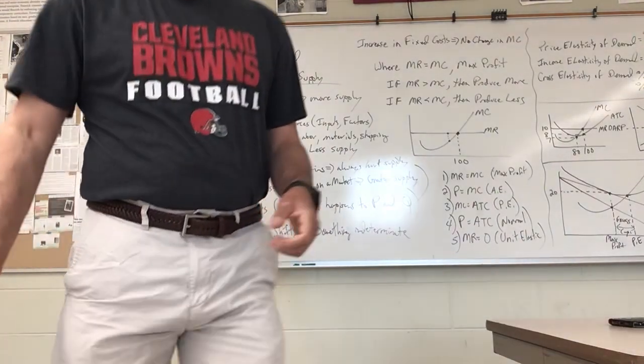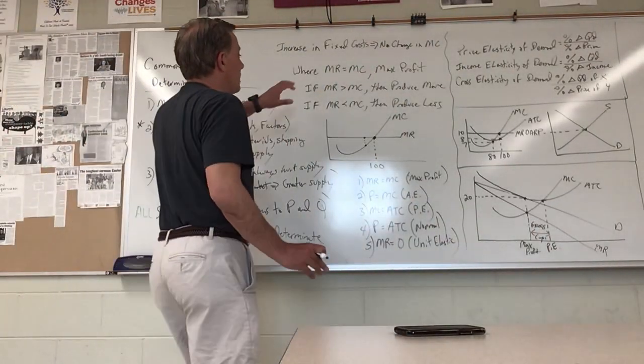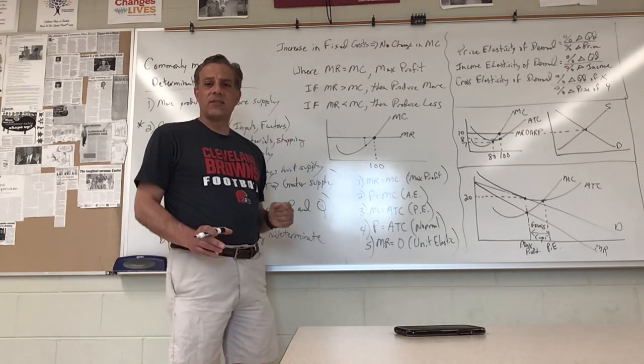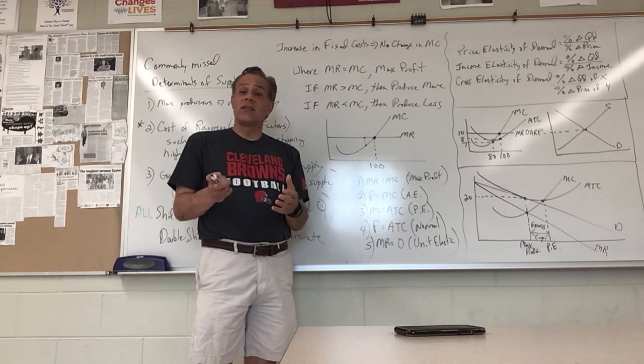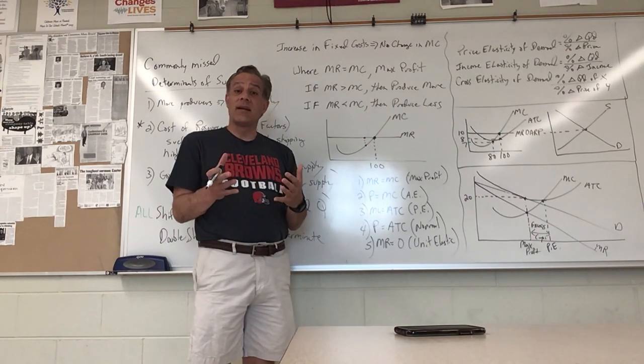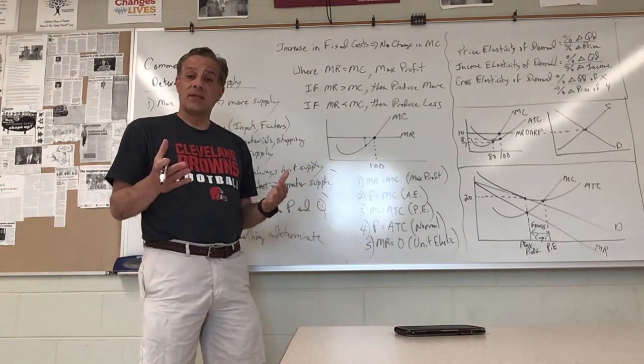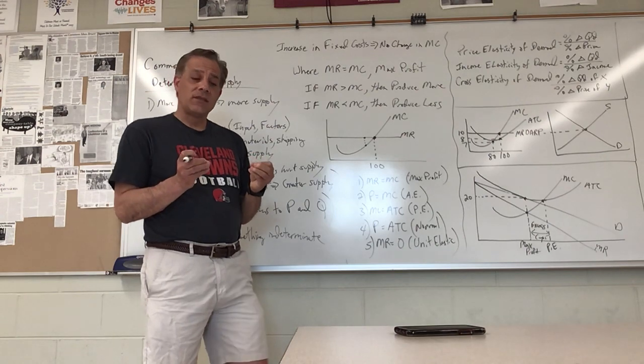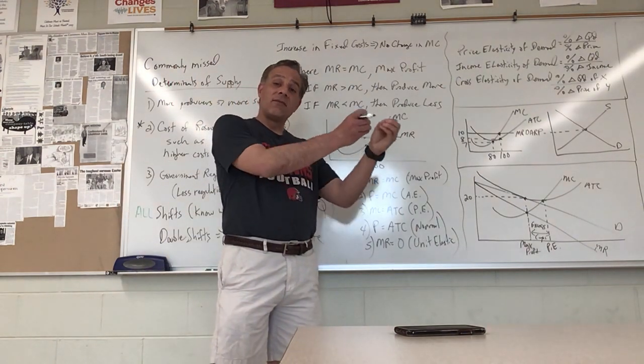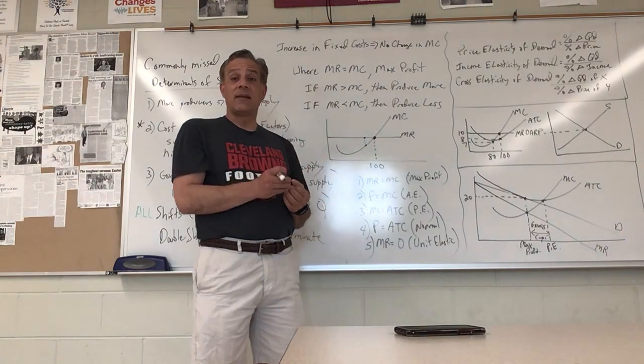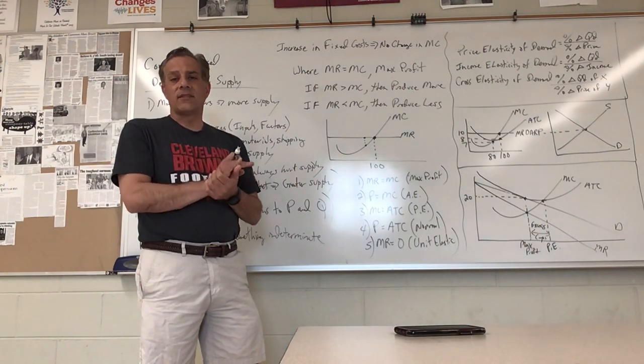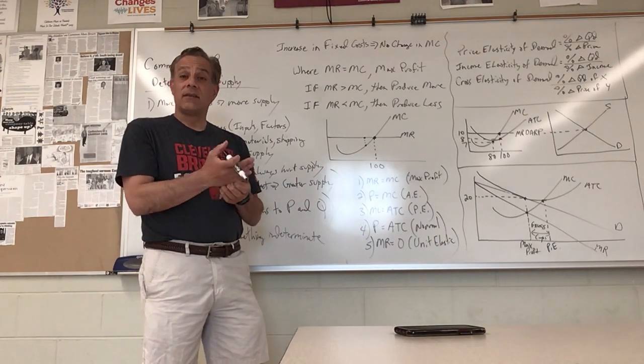Something changes for sure and something is indeterminate if there is a double shift. Moving horizontally, an increase in fixed cost - remember there's no change in marginal cost. If there's no change in marginal cost, there's no change in quantity because marginal revenue equals marginal cost is the quantity of max profit. If fixed costs change, there's no change in marginal cost and therefore the firm won't change its quantity.